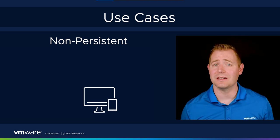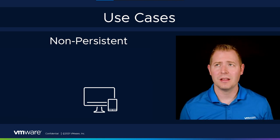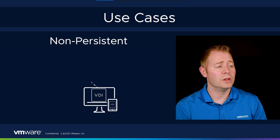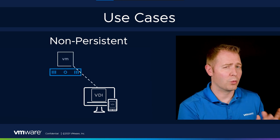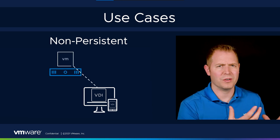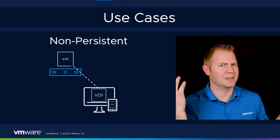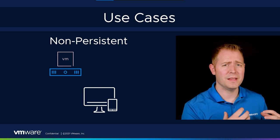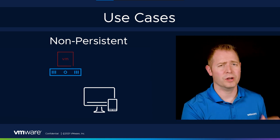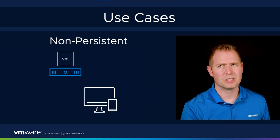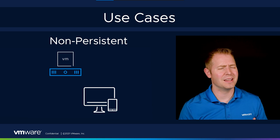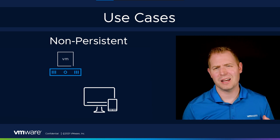Which leads us into our last potential use case: non-persistent VMs. Think about VDI — we log into the VM, do our work, our data is stored somewhere else on the network, we log off, that VM is destroyed, and we deploy a new VM. So do we need to have redundancy on the back end? Possibly, but probably not.